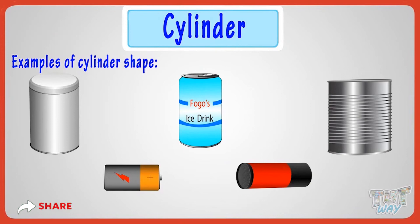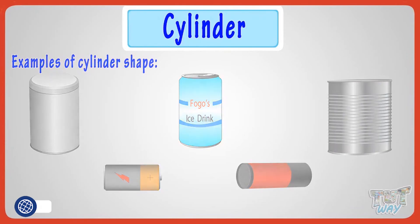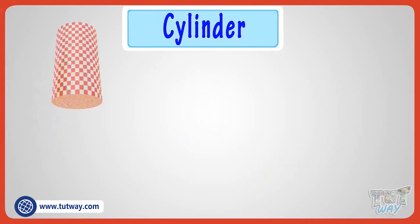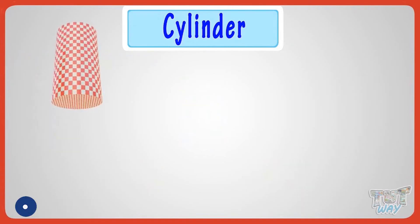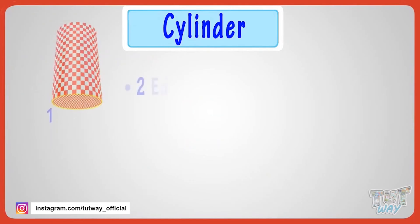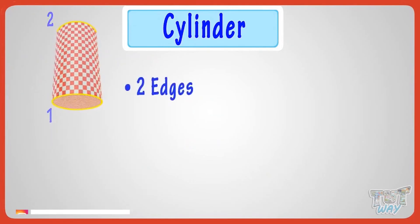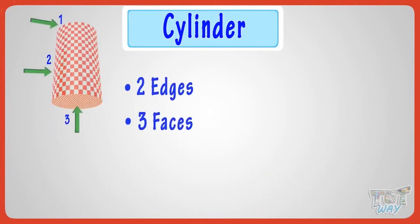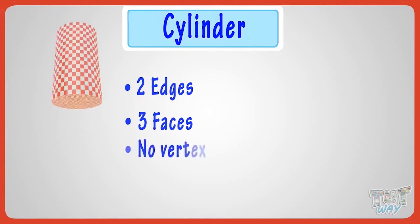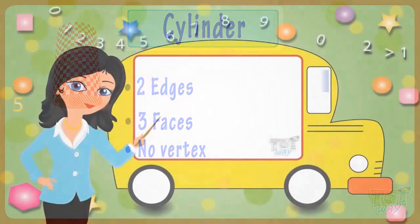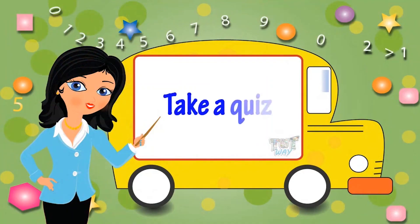Don't forget: we have learned that a cylinder is a 3D object with two edges, three faces, and no vertex. Now go ahead and take a quiz to see your progress. Bye bye!